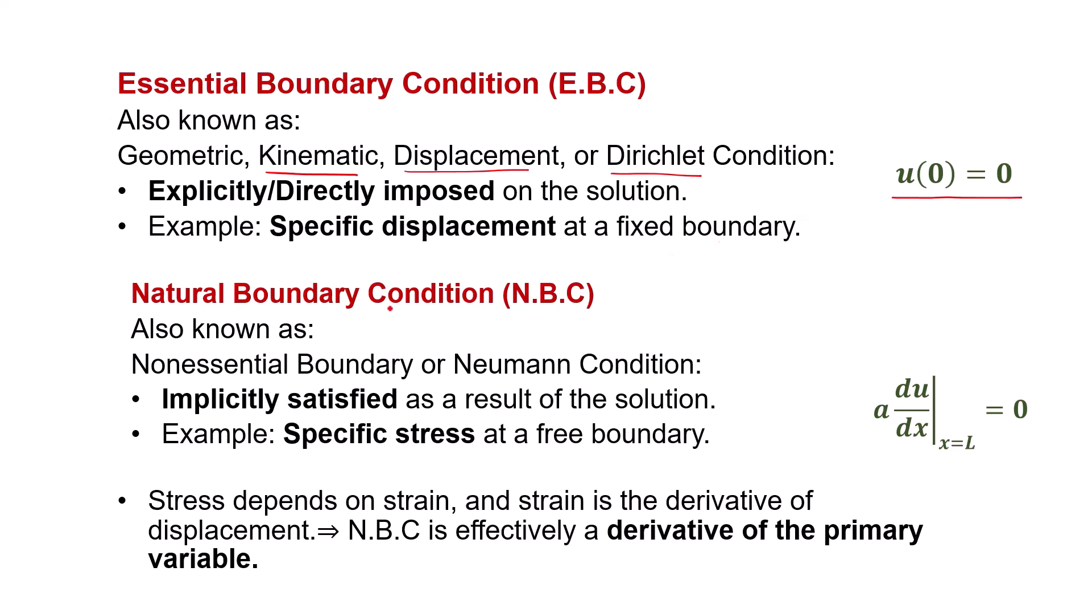The second type is natural boundary condition, also called non-essential boundary condition, or in technical terms, a Neumann condition. These conditions are not directly imposed. Instead, they are automatically satisfied as part of solving the equation. A good example is stress at a free boundary, which is 0.